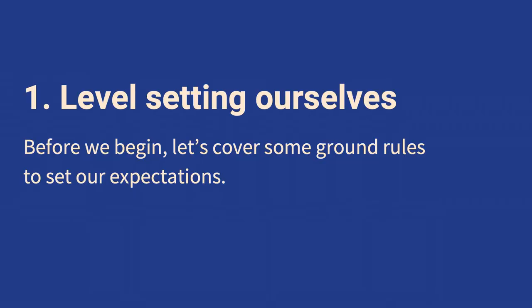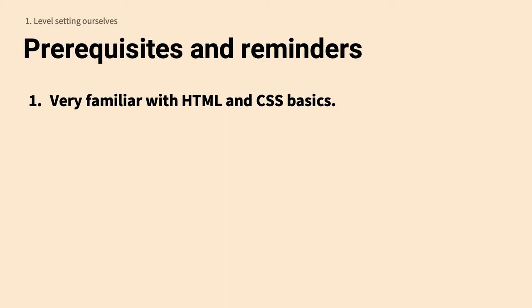Now let's cover some ground rules to set our expectations. If you're evaluating website code for accessibility errors, having a strong working knowledge of HTML and CSS will make your job easier. For instance, knowing the difference between when to use an anchor tag versus a button. Being very familiar with HTML and CSS is incredibly helpful throughout this process.